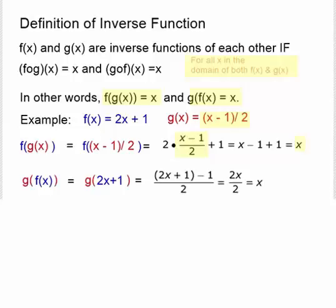Now when we do the other composition, we're taking g of f of x. Here we're plugging the 2x plus 1 function in for the x of g of x. The g of x function is to subtract 1 and divide by 2. When we subtract 1, the ones cancel. We get 2x over 2, which also simplifies to x. So this verifies that f of x and g of x are inverse functions of each other.